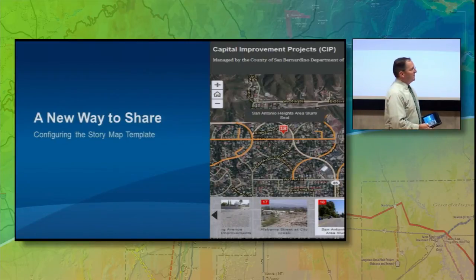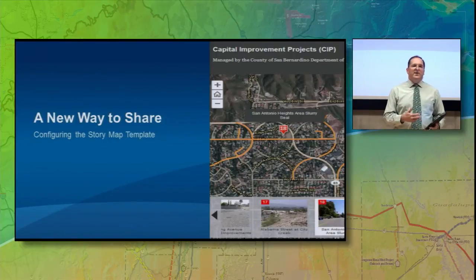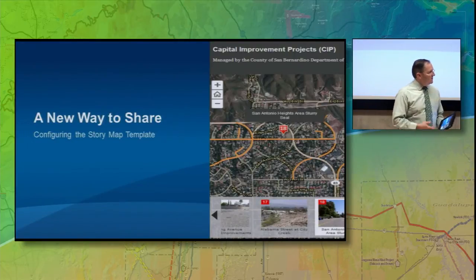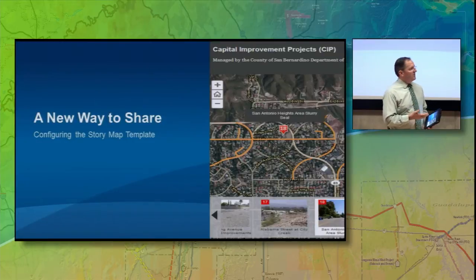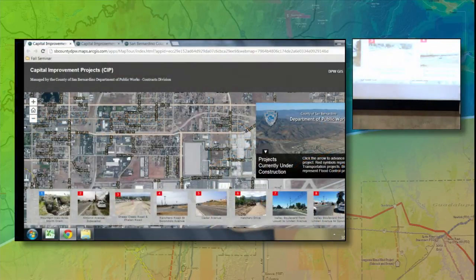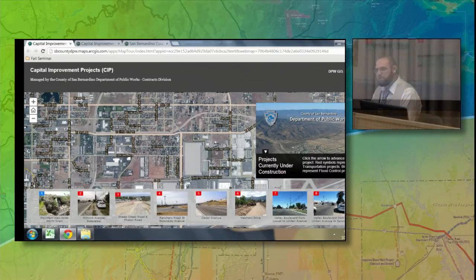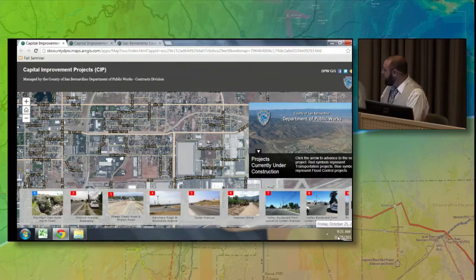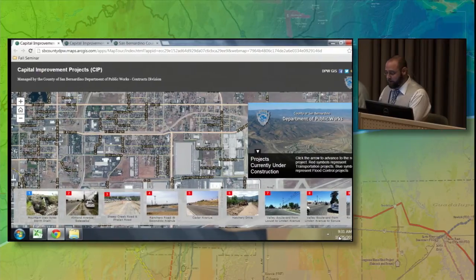I had a call a few weeks ago from a public works group, and they were interested in whether using a story map made sense for them. They'd seen other departments using them, and they weren't sure it made sense for things like water mains and street resurfacing. Personally, I think that makes perfect sense. I agree 100%. I've been recently working with San Bernardino County, and in their public works department, they've created a story map of the public works CIP locations.